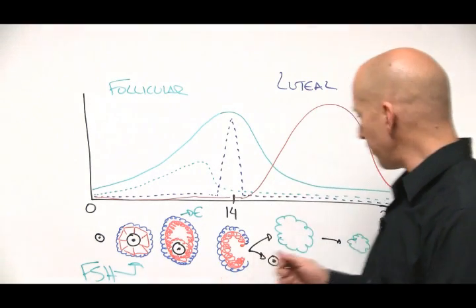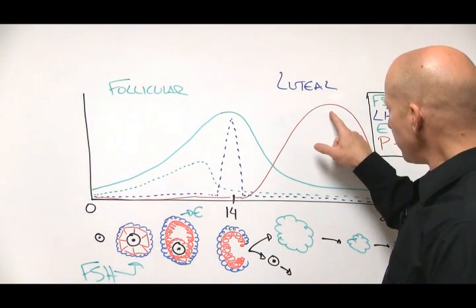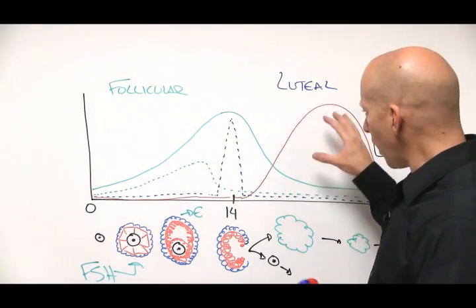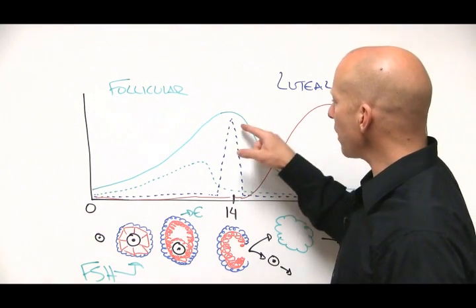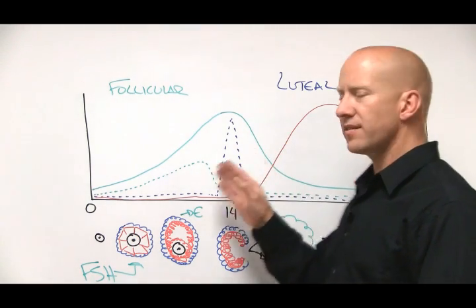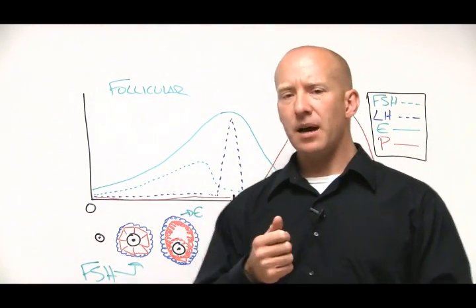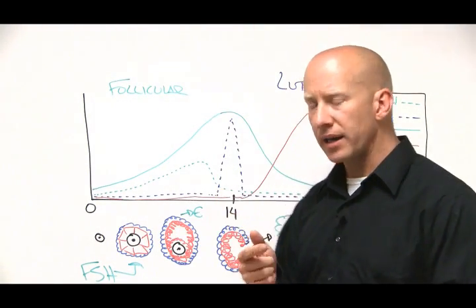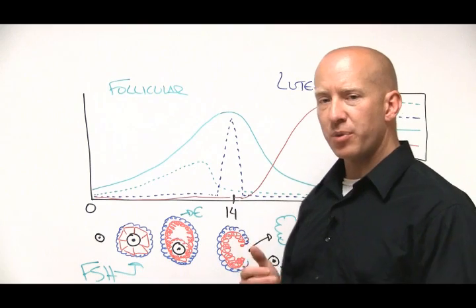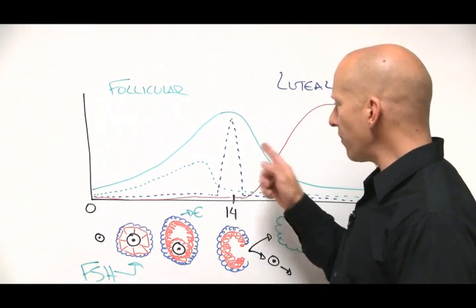So if for example, for progesterone to be released in the quantities that it needs to be, it responds to the amount of luteinizing hormone. So if luteinizing hormone is not made at the right time or quantity, there will not be an adequate amount of progesterone that follows it.